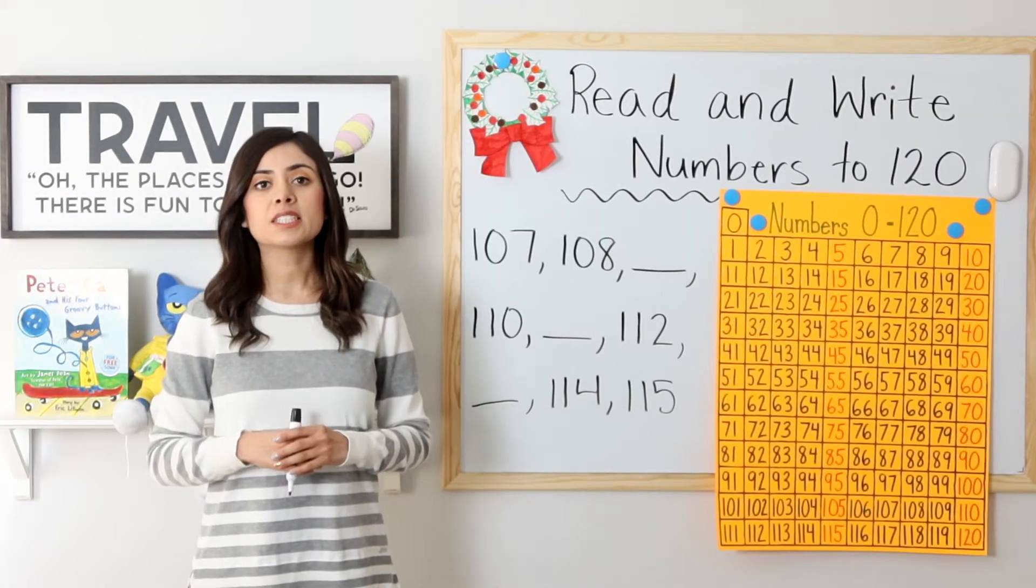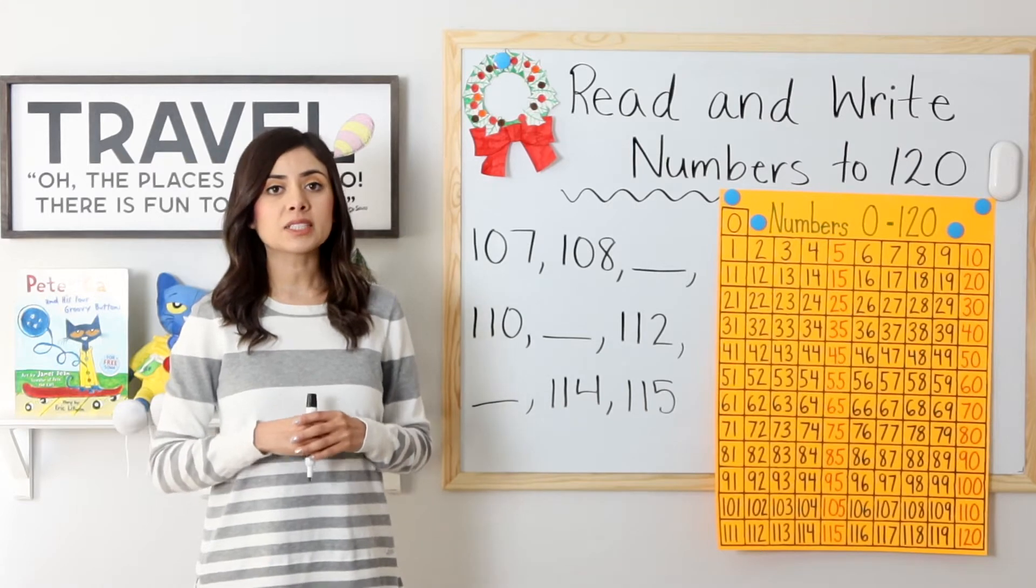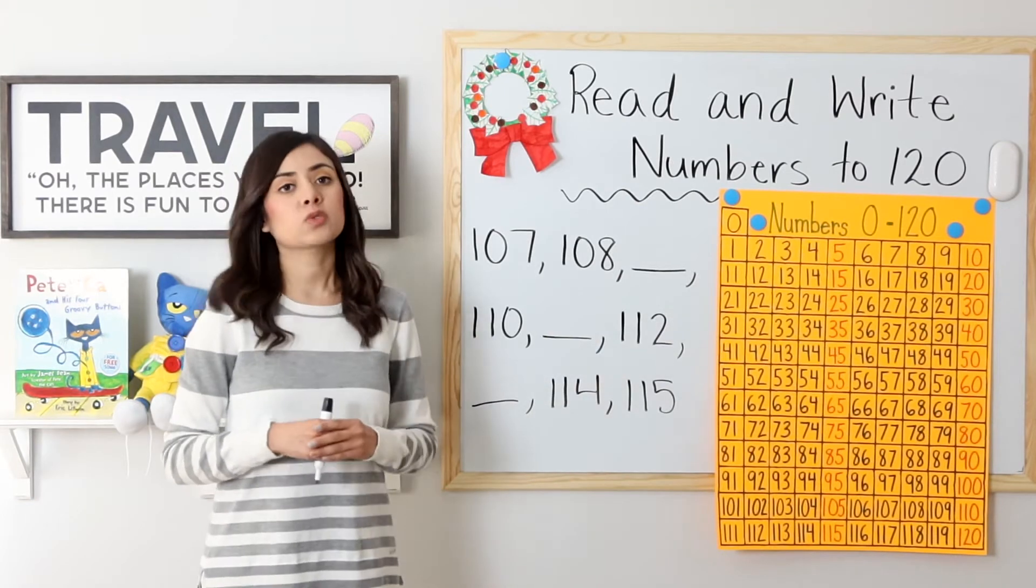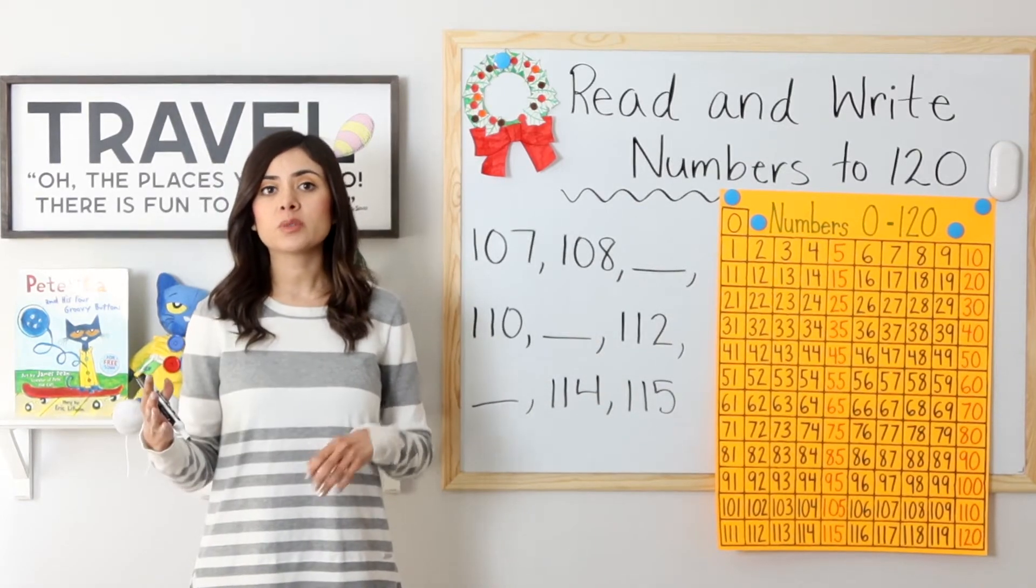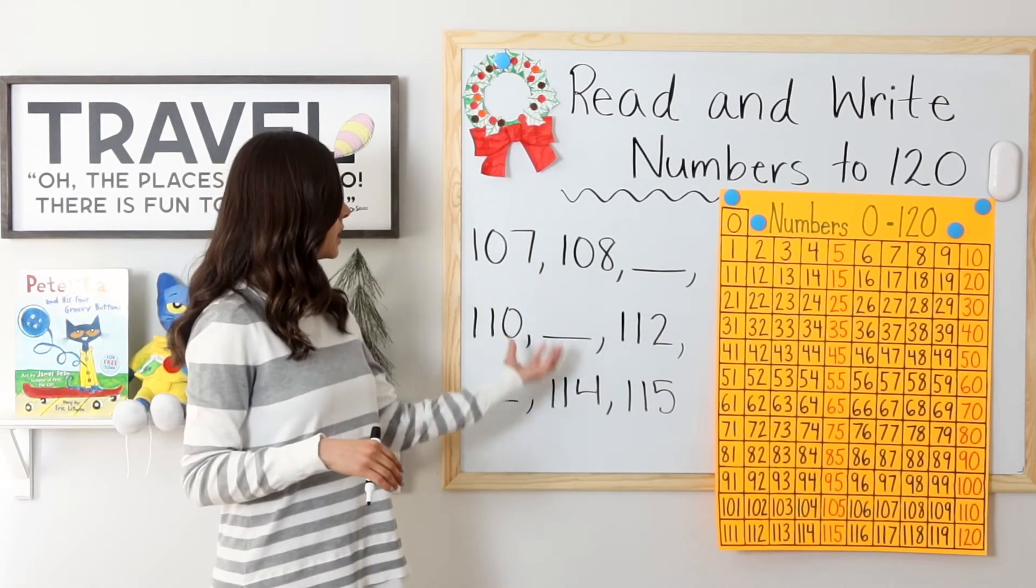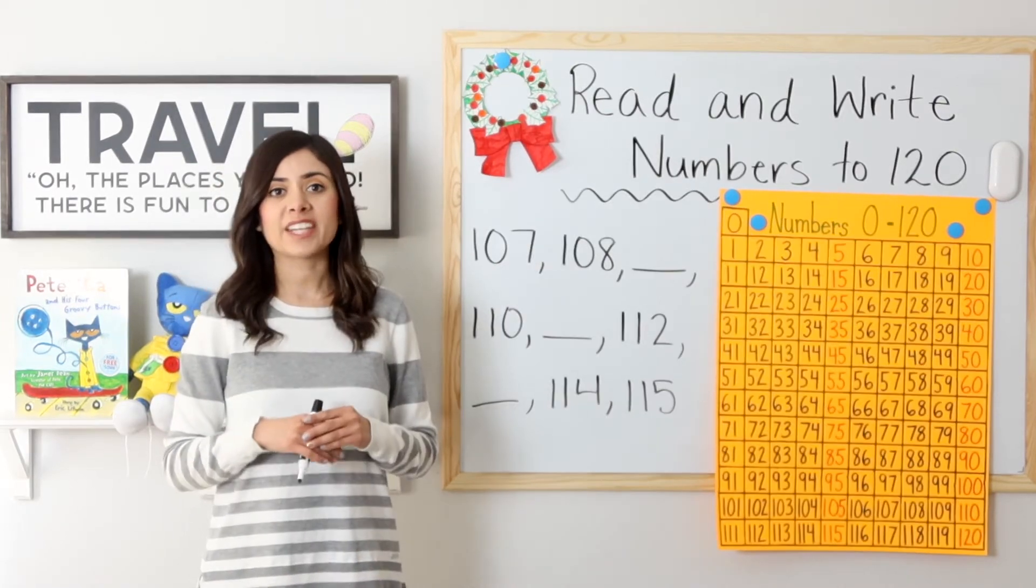So if you saw our last video, you know that we practiced counting from 0 to 120. Here is my chart in which we have numbers labeled from 0 to 120. I will use this chart to help me fill in the missing numbers. Ready? Let's begin.